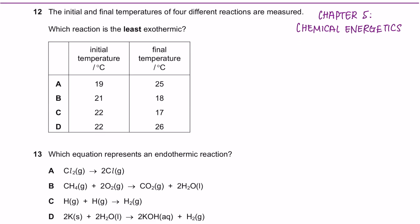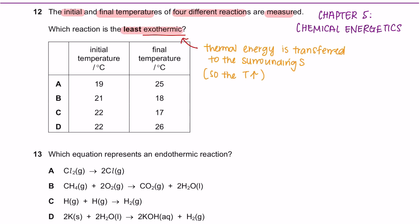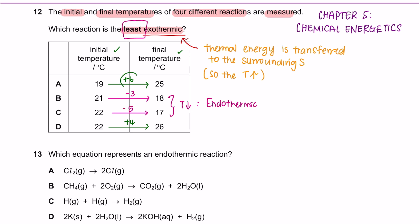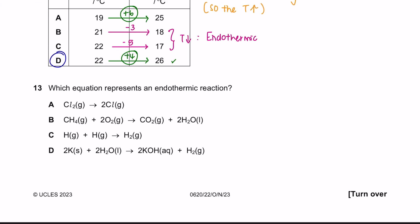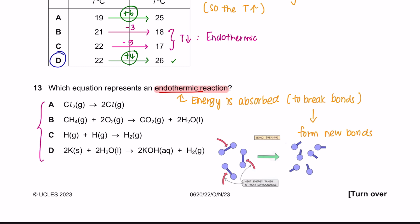Question 12 onwards is from Chapter 5. The initial and final temperatures of 4 different reactions are measured. Which reaction is the least exothermic? Exothermic is a process of losing heat to the surroundings. Two reactions show a decrease in temperature, so those are endothermic. For the least exothermic, we look for the smallest increase in temperature, which is option D. The answer is D. Question 13: which equation represents an endothermic reaction? Endothermic reactions absorb energy to break bonds. Chlorine gas molecules are broken apart to form 2 separate Cl atoms — bond breaking. So the answer is A.